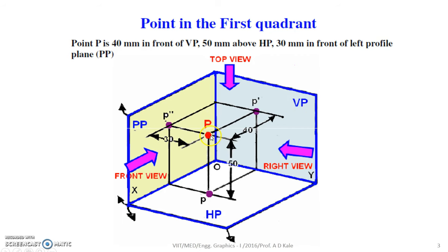Let us see this point P, which is 40 mm in front of VP, 50 mm above HP, and 30 mm in front of the left profile plane. And we want to draw the projection of this point P.